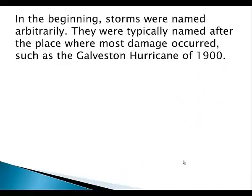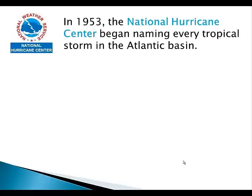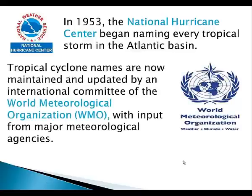In the beginning, storms were named rather arbitrarily — often after the place where the most damage occurred, such as the Galveston hurricane of 1900. Then in 1953, the National Hurricane Center began naming every tropical storm in the Atlantic basin. Today, tropical cyclone names are maintained and updated by an international committee of the World Meteorological Organization, with input from major meteorological agencies such as the National Hurricane Center.